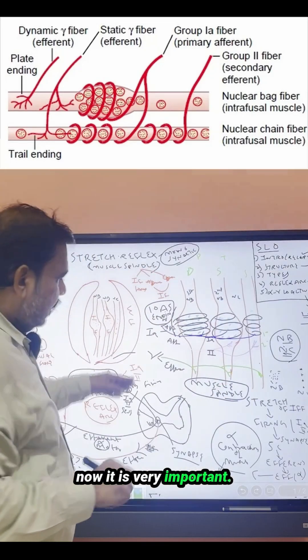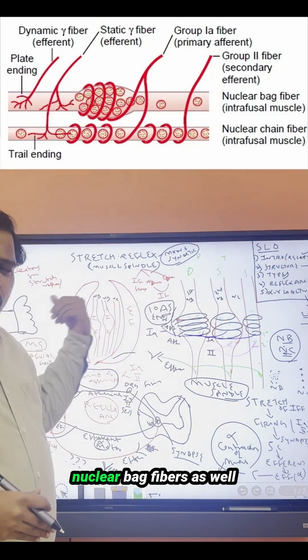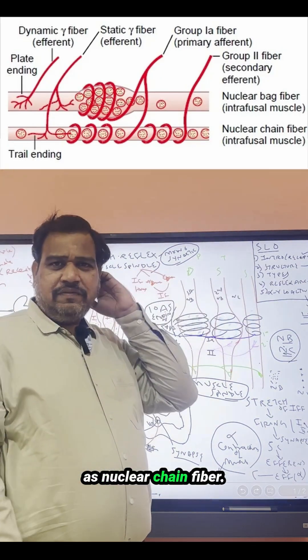And now it is very important. Gamma is the output coming out, which is coming out from both the nuclear bag fibers as well as nuclear chain fiber.